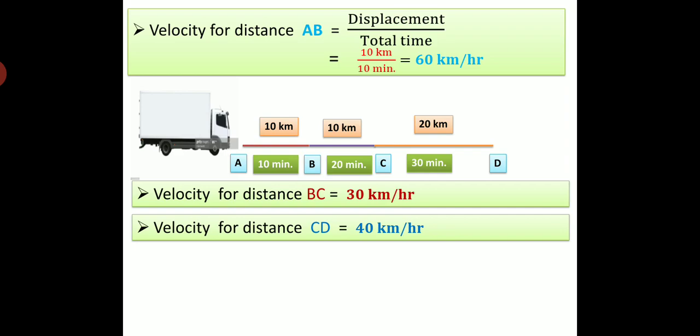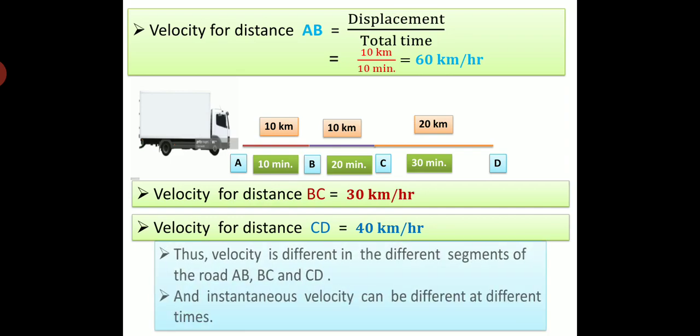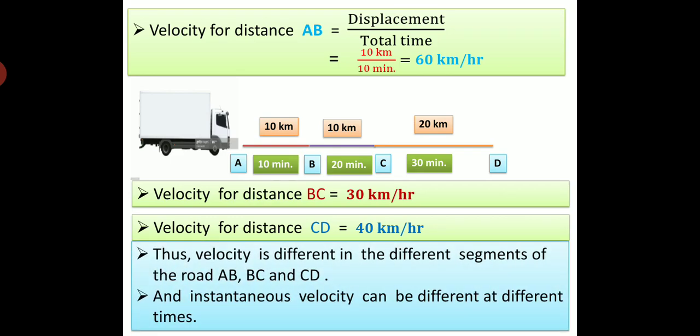So we can see velocity for distances AB, BC and CD is different. Thus, velocity is different in different segments of the road AB, BC and CD, and instantaneous velocity can be different at different times.